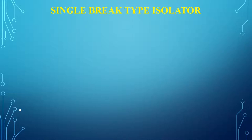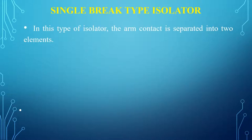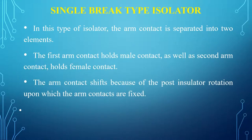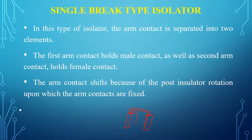The next type is the single break type isolator. In this type, the arm contact is separated into two elements. The first arm contact holds the male contact, and the second arm contact holds the female contact. The arm contact shifts because of post insulator rotation, upon which the arm contacts are fixed. The second element consists of a tubular rod that is fixed and operated with one more insulator.